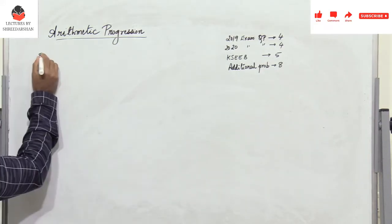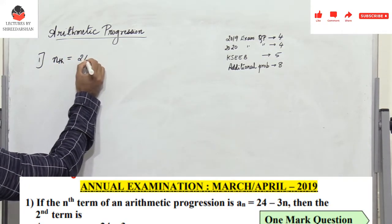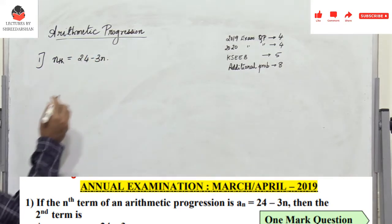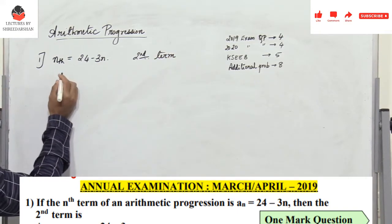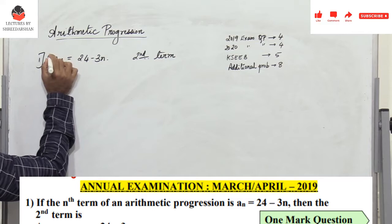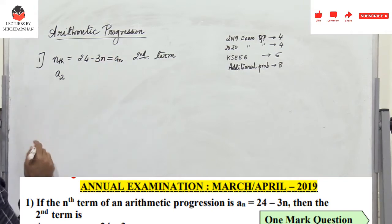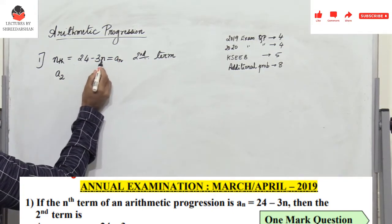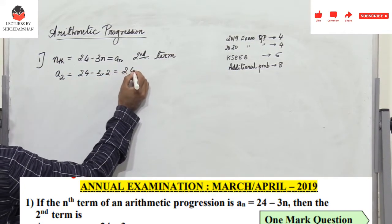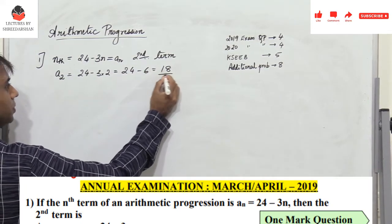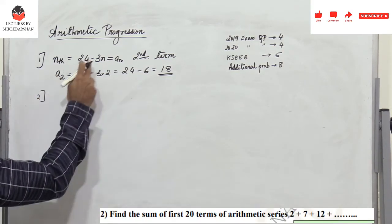The first problem: given the nth term of an arithmetic progression is 24 minus 3n, find the second term. To find a₂, since aₙ = 24 - 3n, I replace n by 2: 24 minus 3 into 2 gives 24 minus 6, which is 18. So 18 is the answer. This is a question from March/April 2019.